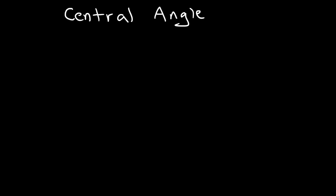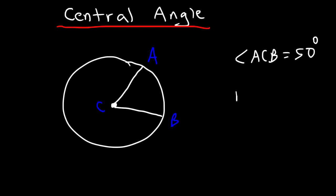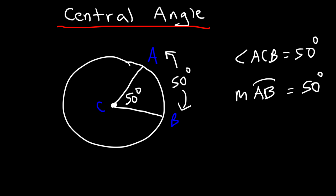In this lesson we're going to focus on circles and angles. The first type of angle you need to be familiar with is the central angle. The central angle has its vertex at the center of the circle. For example, if circle C has angle ACB equal to 50 degrees, the measure of arc AB is also 50 degrees — the intercepted arc and the central angle are the same.